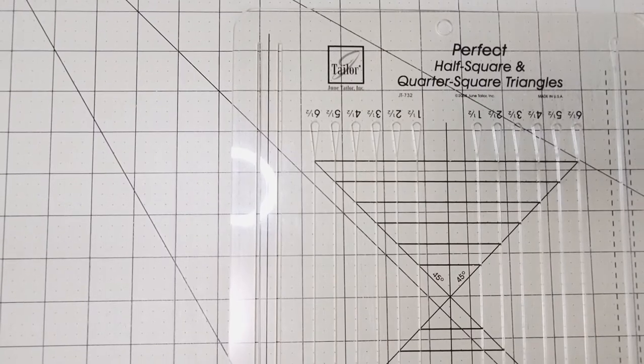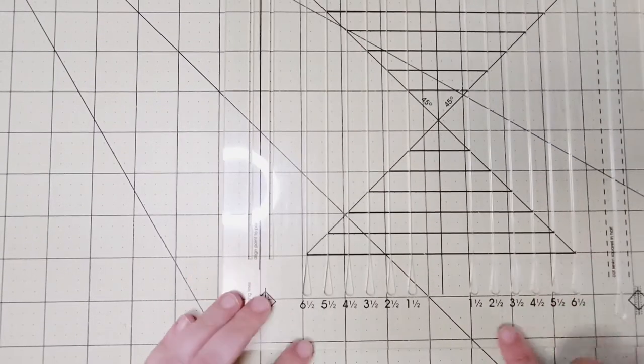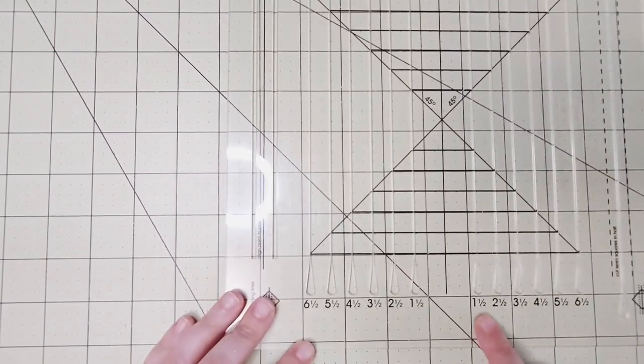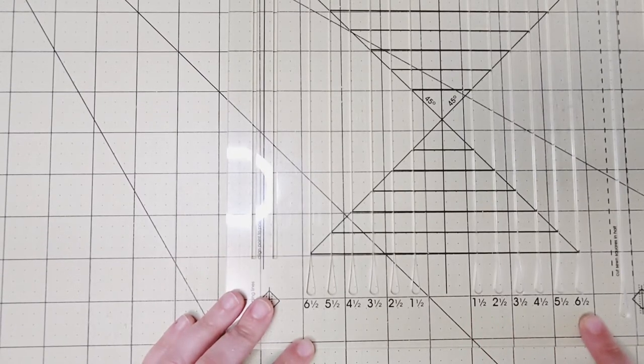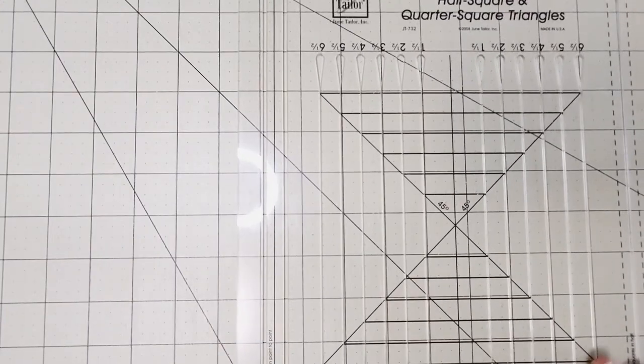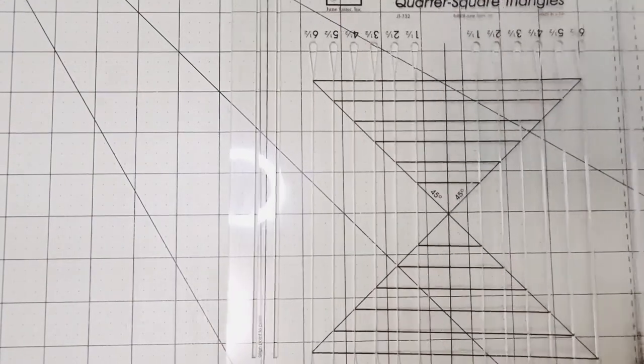I really like this ruler because you can trim from one and a half unfinished HSTs all the way up to six and a half unfinished HSTs, so it's pretty versatile. You have one ruler that can do all of those for you.